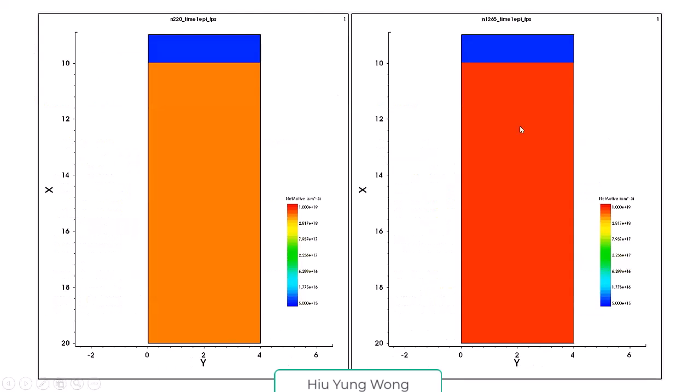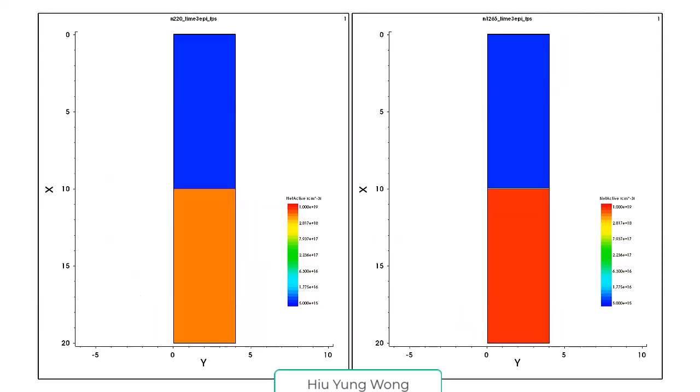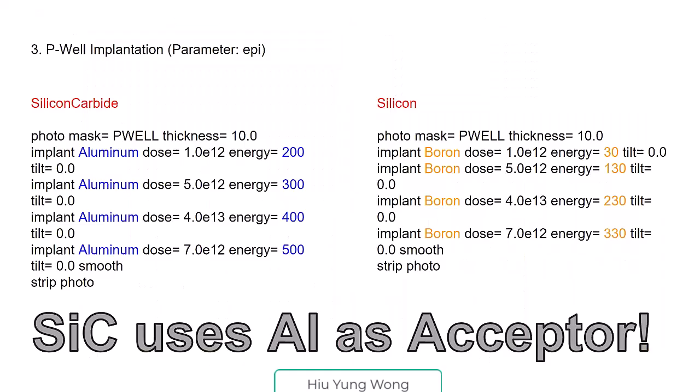This is the growth—nothing special but higher temperature. We grow the epi on top of it, we keep increasing the epi. This is the so-called drift layer. Remember we talked about the drift layer, and here just a zoom in.